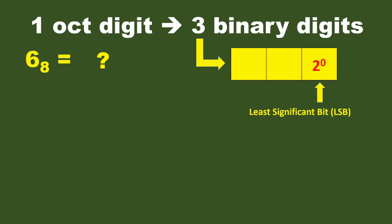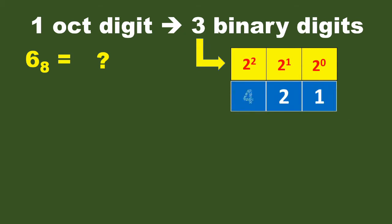Place values are always powers of the base: 2 to the power of 0, 2 to the power of 1, and 2 squared. If we evaluate these, they give us 1, 2, and 4. It is like we have three switches — switch 1, switch 2, and switch 4. Which of these switches will be on in order to generate the number 6?